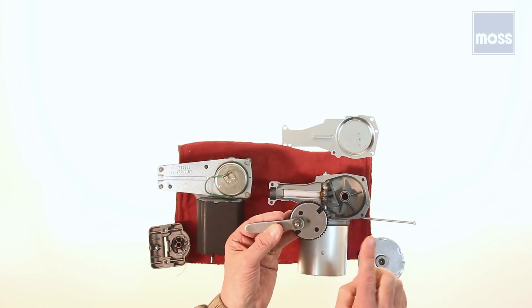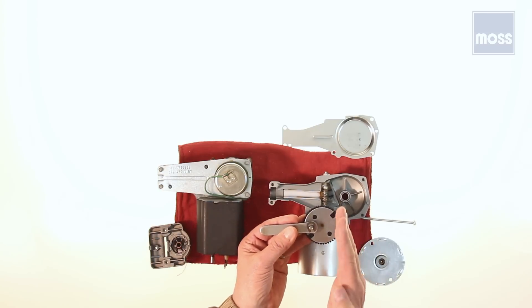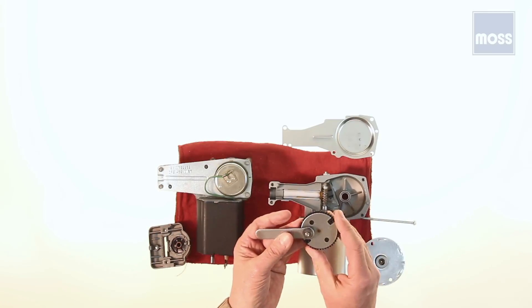That's how a motor which goes around and around and around in one direction can turn the wiper blades, left, right, left, right, left, right, forward and back.